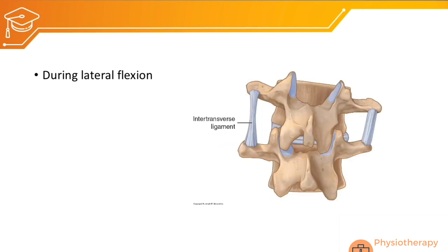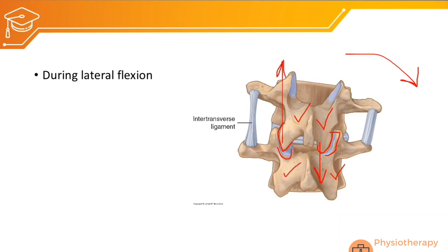During lateral flexion to the right, on the same side the inferior articulating facet of the superior vertebra slides inferiorly on the superior articulating facet of the inferior vertebra, while on the opposite side it slides superiorly. The intertransverse ligament limits this side flexion, as previously discussed for the thoracic and cervical spine.